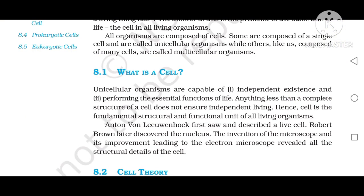What is a cell? Unicellular organisms are capable of independent existence and performing the essential functions of life. Anything less than a complete structure of a cell does not ensure independent living. Hence, cell is the fundamental, structural, and functional unit of all living organisms. Anton van Leeuwenhoek first saw and described a living cell. Robert Brown later discovered the nucleus. The invention of the microscope and its improvements, leading to the electron microscope, revealed all the structural details of the cell.